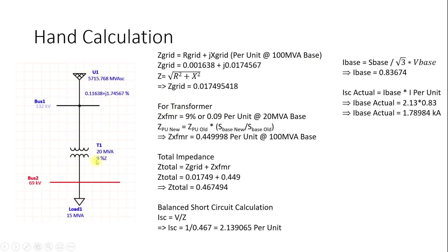For the transformer, Z = 9% at 20 MVA base, which is 0.09 pu at 20 MVA. We convert to 100 MVA base using Z_pu_new = Z_pu_old × (S_base_new / S_base_old) = 0.09 × (100/20), giving Z_transformer = 0.45 pu at 100 MVA base.